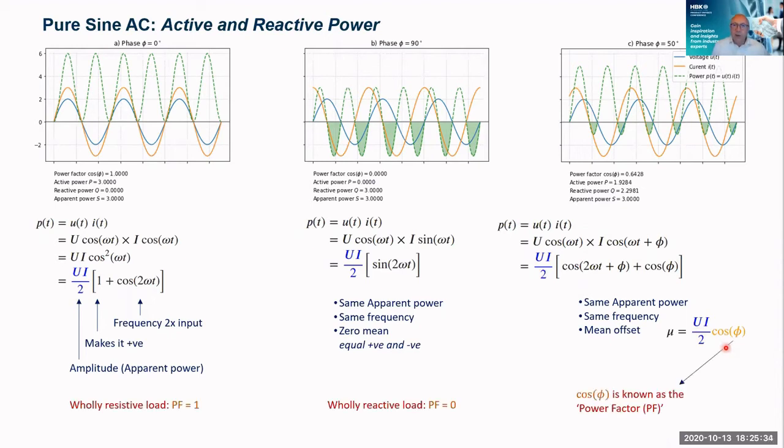Now this parameter cos(φ) is what's called the power factor. So when φ is zero, cos(φ) becomes one, and that's when we have a wholly resistive load. If φ is 90 degrees, then the cos(φ) becomes zero. So it's a wholly reactive load. And the power factor can be anything between plus one and minus one, depending on its value tells us the amount of active and reactive components in there.